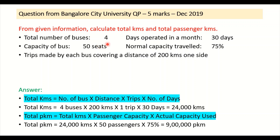Look at this information: total number of buses is 4, operating 30 days in a month, capacity of buses is 50 seats, normal capacity travelled is 75 percent, and trips made by each bus covering a distance of 200 kilometers one side.